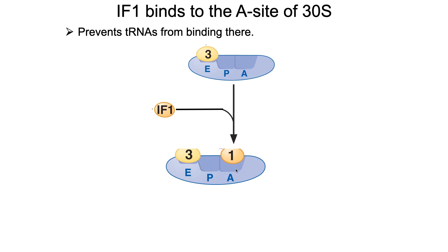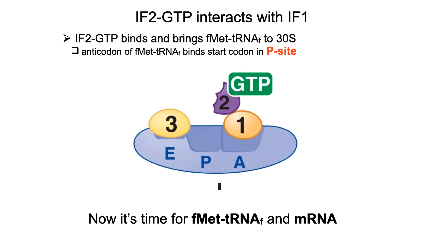The very first transfer RNA that binds has to be the initiator tRNA. That initiator tRNA binds to the P site, not the A site, so that leaves the P site open. It is initiation factor 1 that recruits IF2-GTP. IF2 is a regulatory GTPase — we'll talk in a bit of detail about what that means in just a few slides.